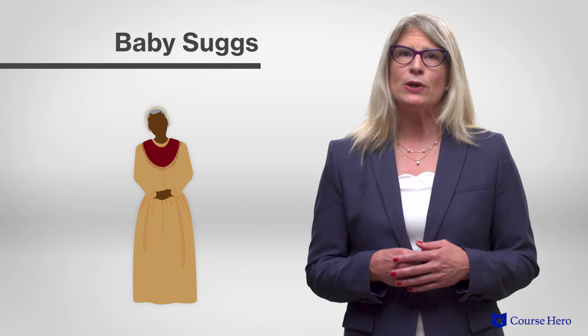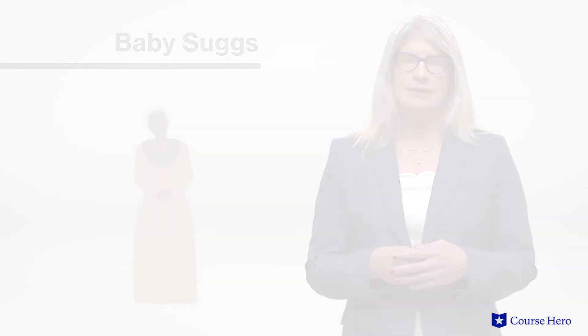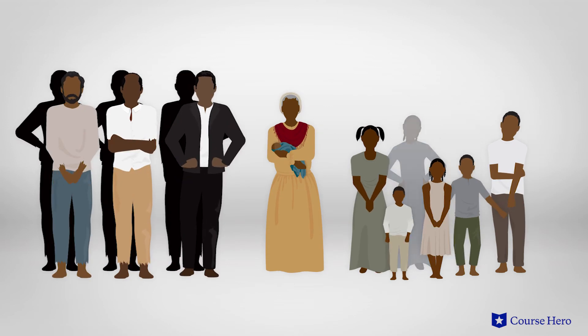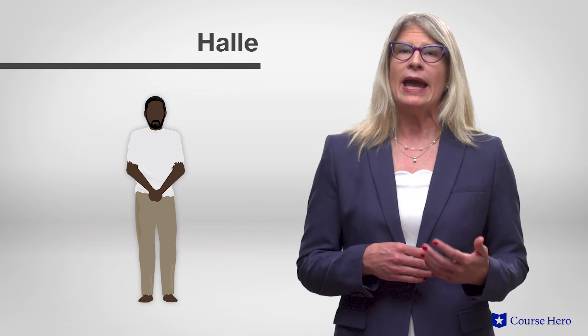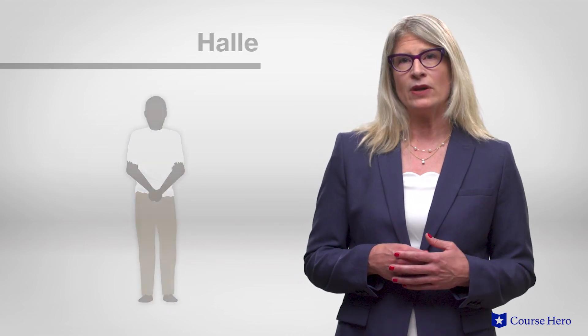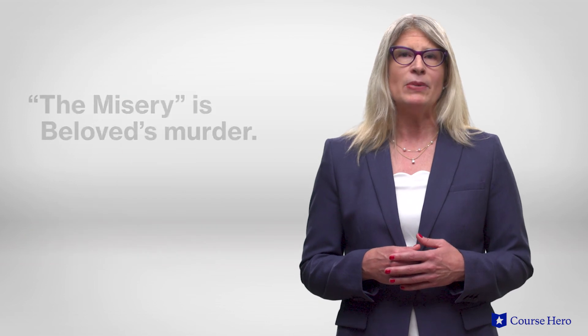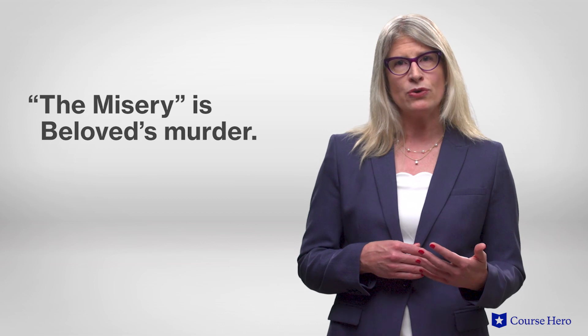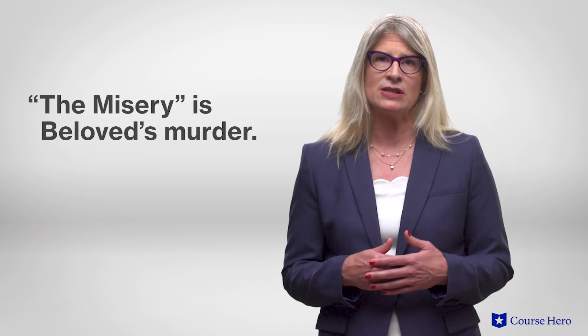Baby Suggs is dead and the reader learns about her through flashbacks. As a slave, she bore eight children by six men and was only allowed to raise one, Halle. When she became crippled later in life, Halle worked to buy her freedom. At 124, she preaches self-love and makes her house a way station of information, food, and communal love. But after the misery, she collapses, unable to decide whether to condone or condemn Sethe's actions. In the absence of her galvanizing force, the community at large alienates Sethe.